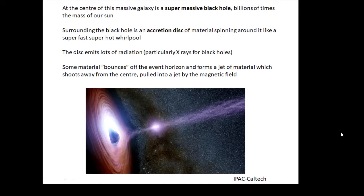It bounces off the event horizon very fast and forms a jet of material which shoots away from the center. The magnetic field of the black hole collimates it into a jet of material stretching out hundreds of light years from the black hole.